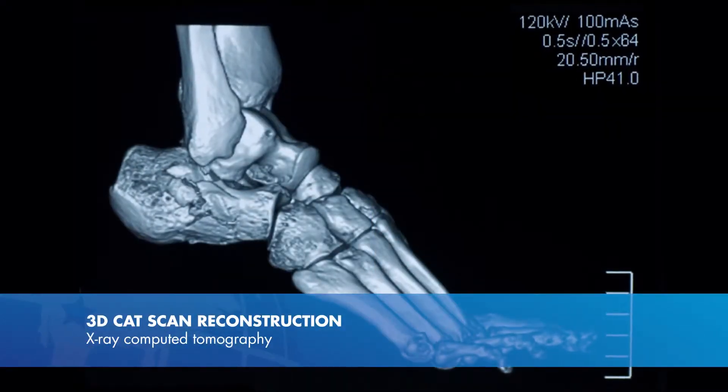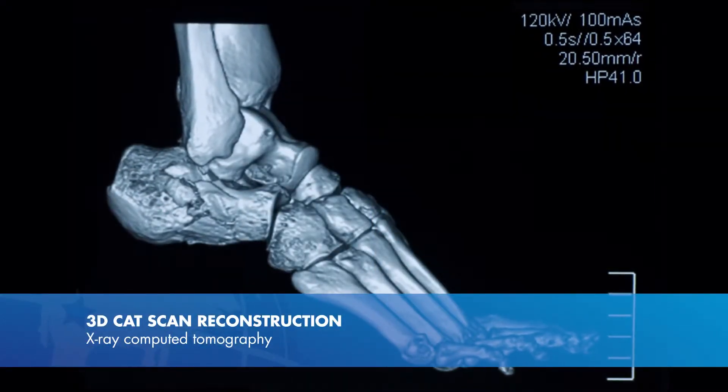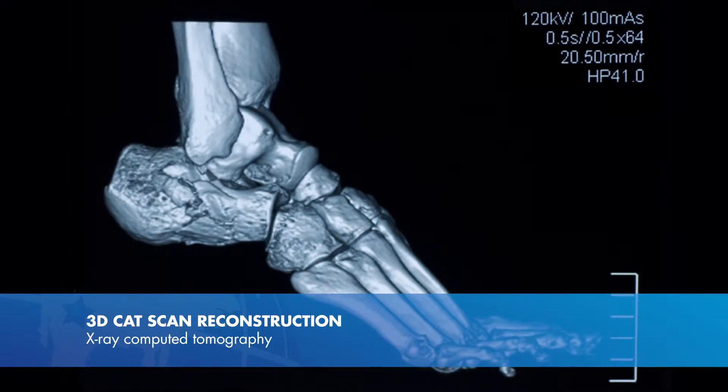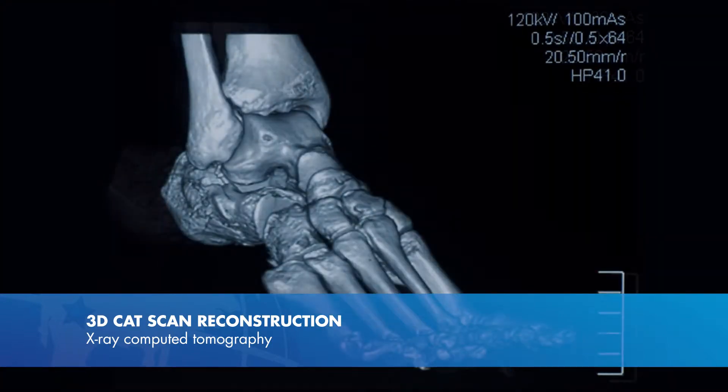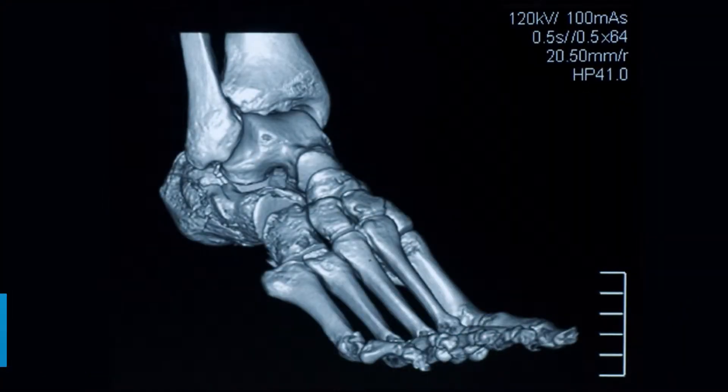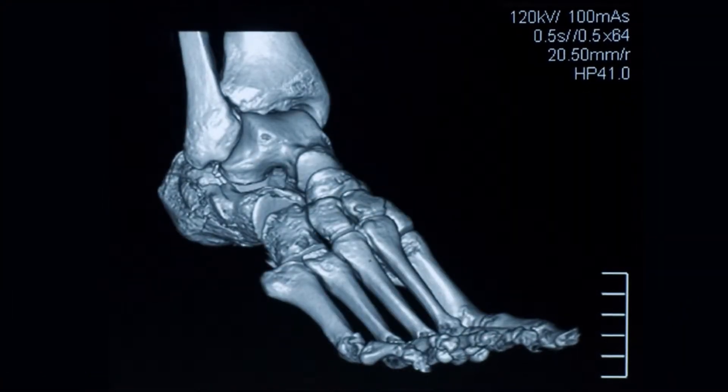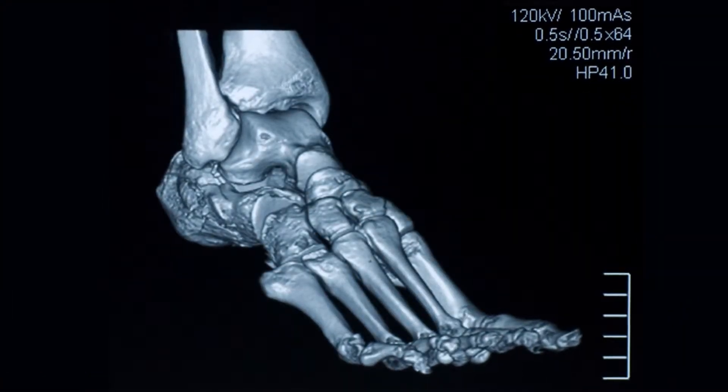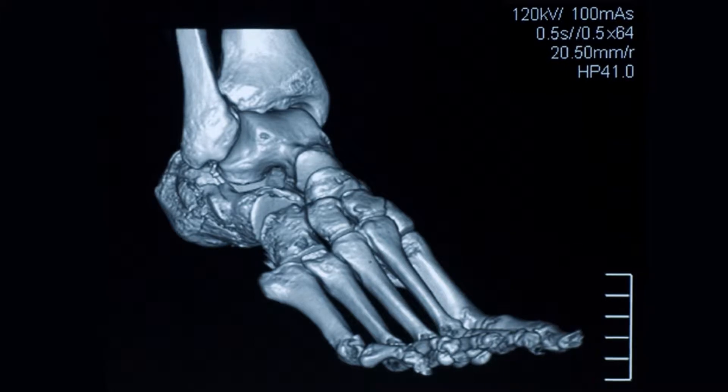What that means is you're no longer just looking at an image front to back or side to side, but you get an actual three-dimensional object that you can look at on a screen and rotate in space. That allows us to plan what kind of procedures we're going to do and greatly affects our ability to have better outcomes.